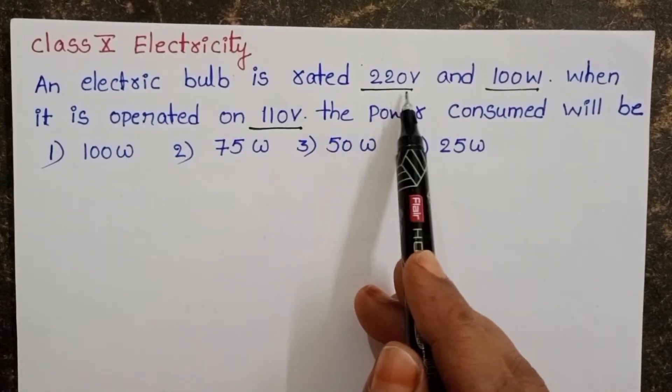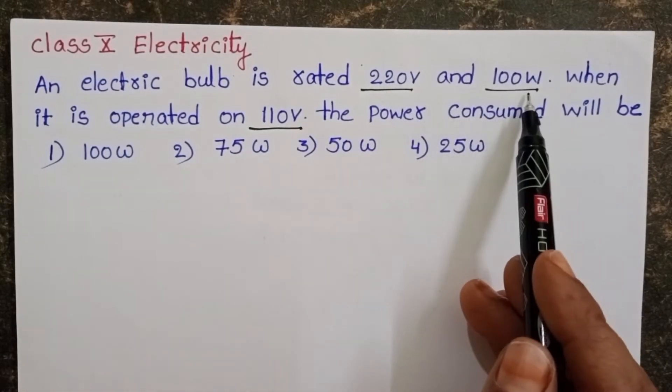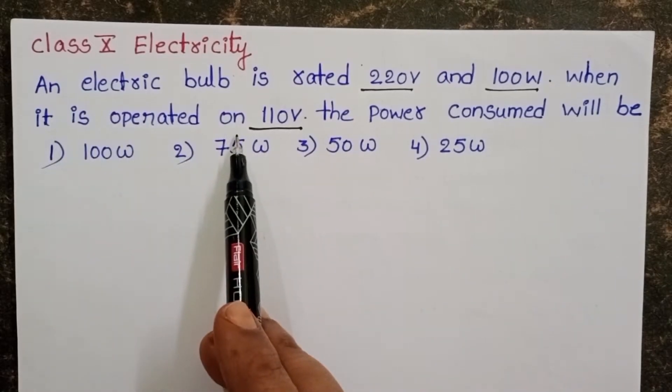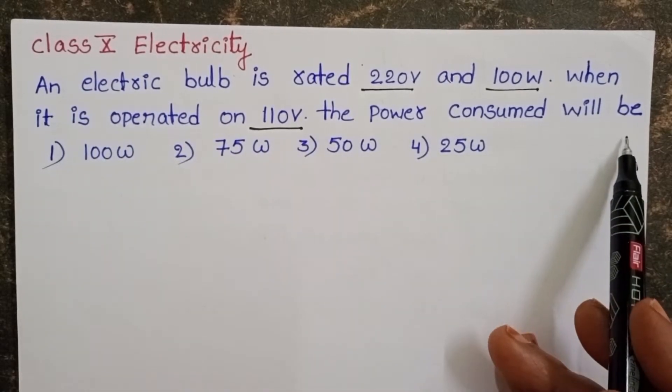An electric bulb is rated 220 volt and 100 watts. When it is operated on 110 volt, the power consumed will be?